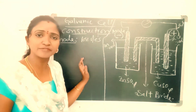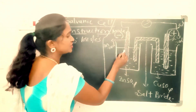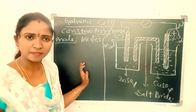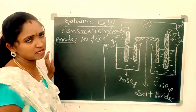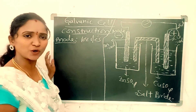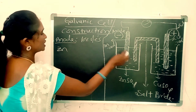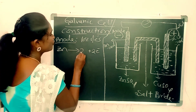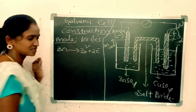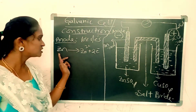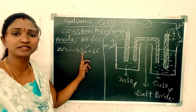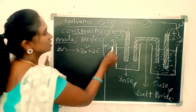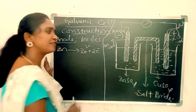The zinc electrode loses electrons into the zinc sulfate solution and forms Zn²⁺ ions. Pure zinc electrode loses the electrons and is converted to Zn²⁺ ions. Because pure zinc lost the electrons, we call this an oxidation reaction. The released electrons then enter the external circuit.